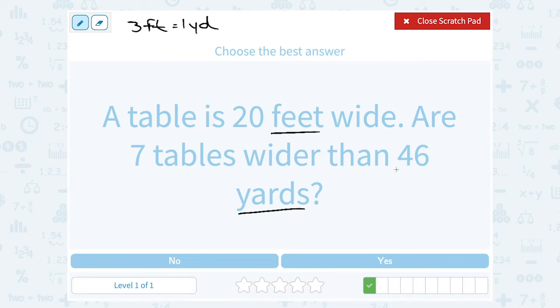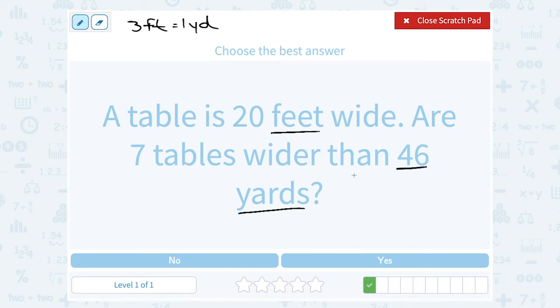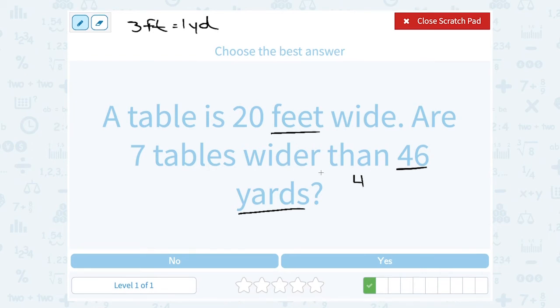So that means if we have 46 yards we can multiply that by 3 to see how many feet we have. So 46 times 3. Well 3 times 6 is 18. So I'm going to write my 8 carry the 1. 3 times 4 is 12 plus the extra 1 is 13.